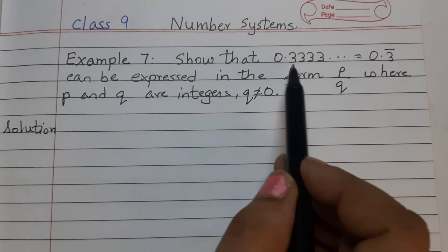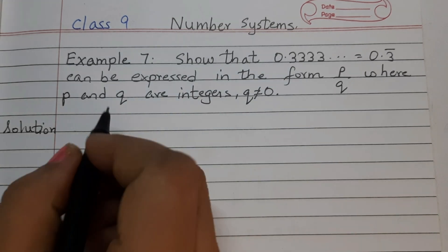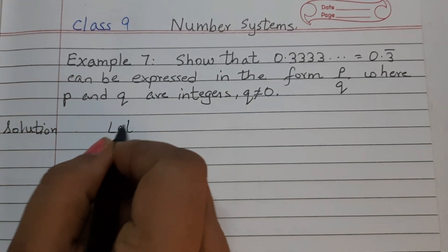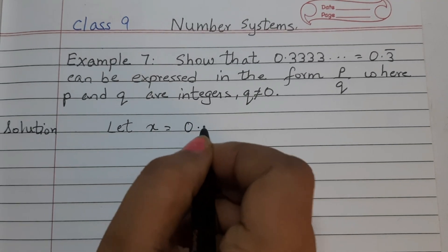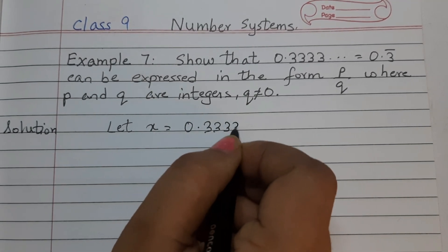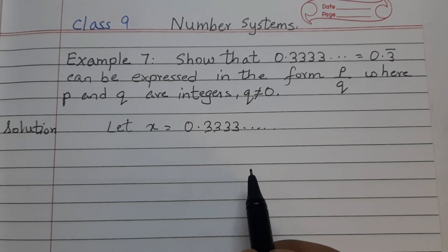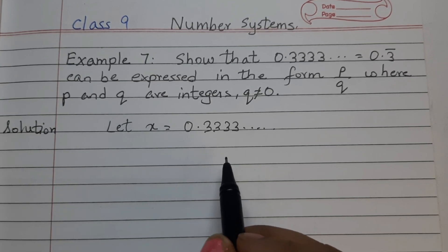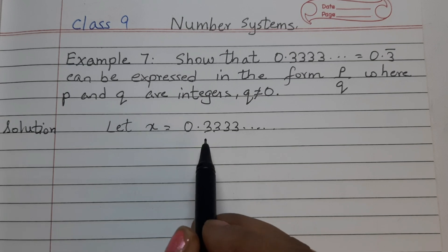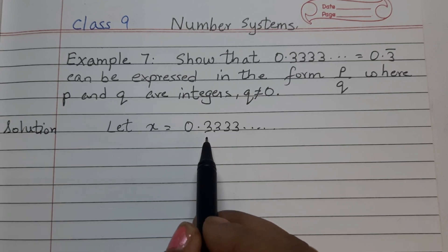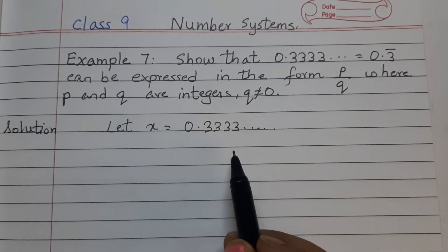So the first step is let us call this decimal number as x. So let x equals to 0.3333. Now here is the trick: we need to multiply both sides by 10 because here just one digit is repeating itself. So multiply by 10. If there are two digits which are repeating, then multiply by 100. If there are three digits, multiply by 1000.